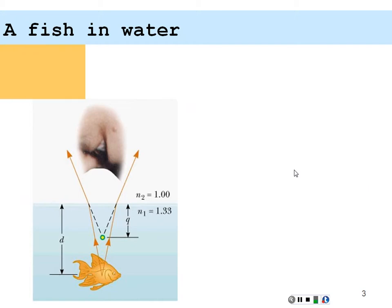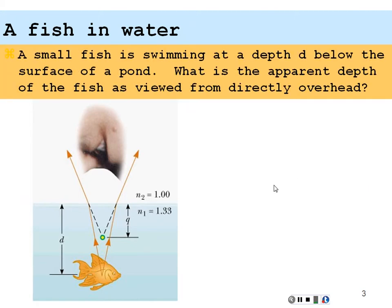Let's try this out with an example. A small fish is swimming at a depth d below the surface of a pond. What is the apparent depth of the fish as viewed from directly overhead? The fish originates rays of light that travel through the water, hit the interface with the air, and refract away from the normal, so the image of that fish is going to appear shallower in the water.